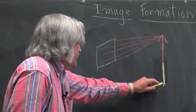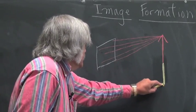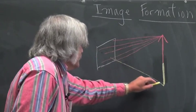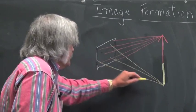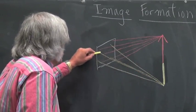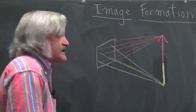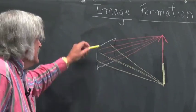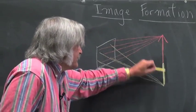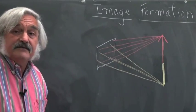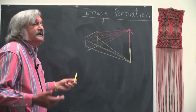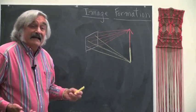On the other hand, the tail of the arrow, some of that light will go here. Some of that light will go here. Some of that light will go here. And you can see pretty clearly that you're just going to have a complete mess. There's going to be light coming from all parts of the arrow on all parts of your detector. So you're not going to get an image.